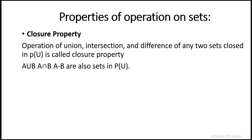It says that A union B, A intersection B, and A minus B are also sets in the power set of the universal set. Let's take a set. We have a universal set with elements 1, 2, 3. We have set A with elements 1, 2, and set B with element 3. As we know, sets A and B are subsets of the universal set.